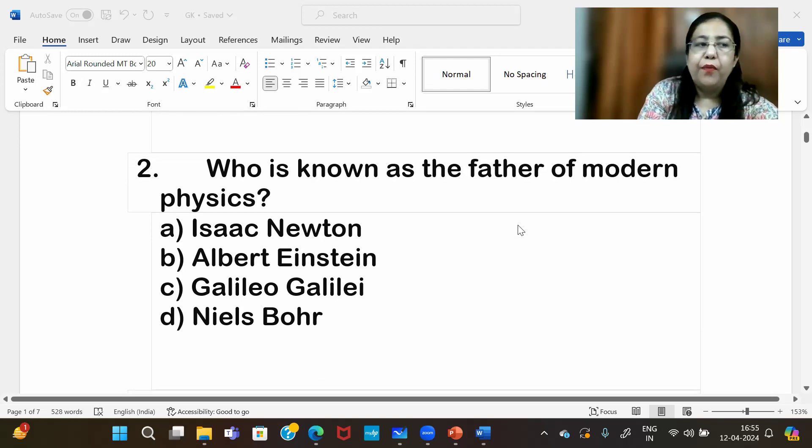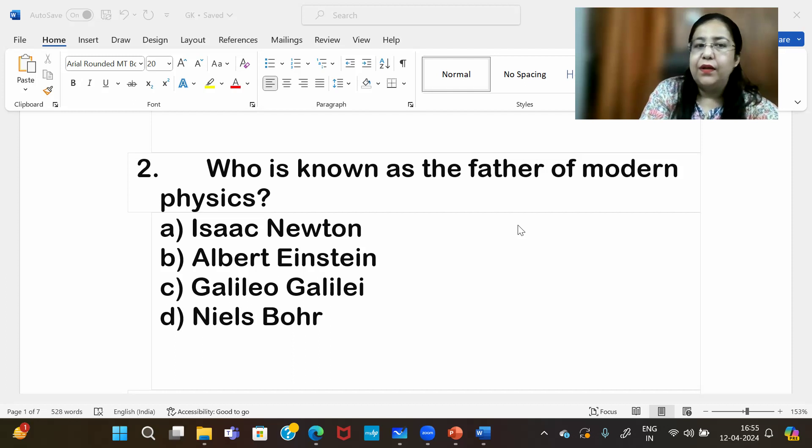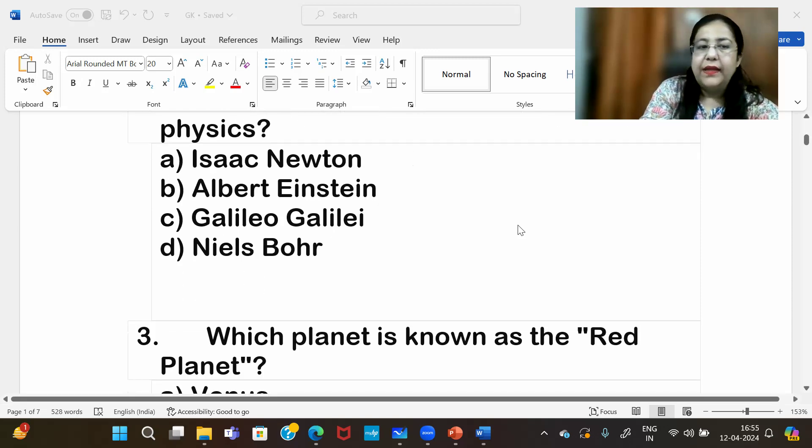Who is known as the father of modern physics? Out of the given options, the correct answer is Albert Einstein.